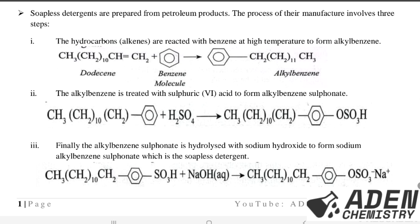Soapless detergents are prepared from petroleum products, while soap detergents are prepared from fats and oils. The manufacturing process involves three steps. Step one: hydrocarbons, that is alkenes, are reacted with benzene at high temperature to form alkyl benzene.